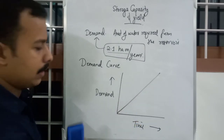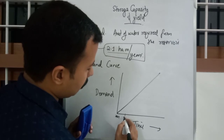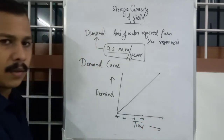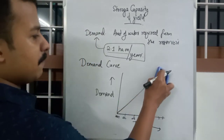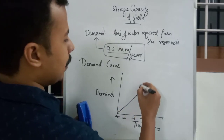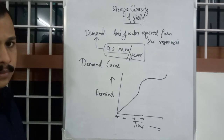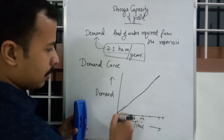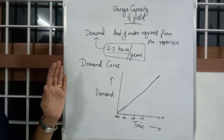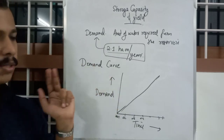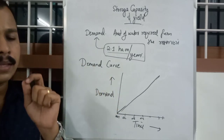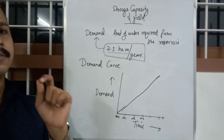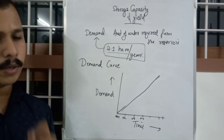If demand varies from year to year, the demand curve becomes a curved line similar to the mass inflow curve. However, we usually consider demand as a straight line (uniform demand). So we have studied yield, safe yield, secondary yield, demand curve, and mass inflow curve. We next move on to the concept of calculation of safe yield and storage capacity.